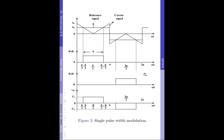These are the waveforms for the Single Pulse Width Modulation Technique, which I showed in my previous video. We learned that one of the biggest disadvantages of the Single Pulse Width Modulation Technique is the presence of harmonic content due to the creation of a single pulse per half cycle. This disadvantage can be overcome by allowing multiple pulses per half cycle, and such a technique is called Multiple Pulse Width Modulation Control.